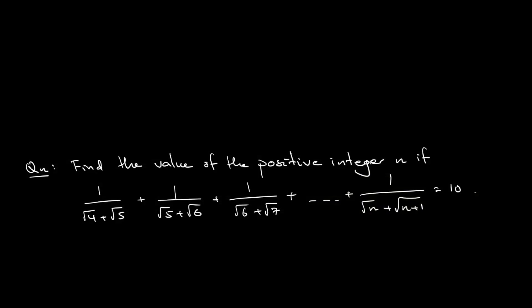The question asks you to find the value of positive integer n given that 1 over square root of 4 plus square root of 5, plus 1 over square root of 5 plus square root of 6, following this pattern all the way until 1 over square root of n plus square root of n plus 1, equals 10. So what is the value of n where n is a positive integer? Let's solve this algebra question together using a telescoping sum.